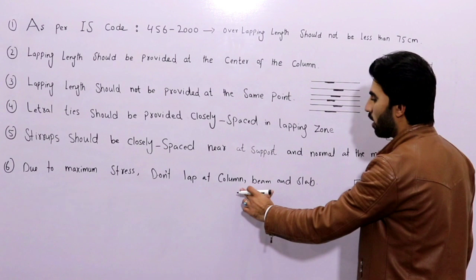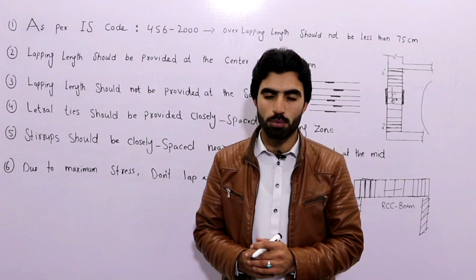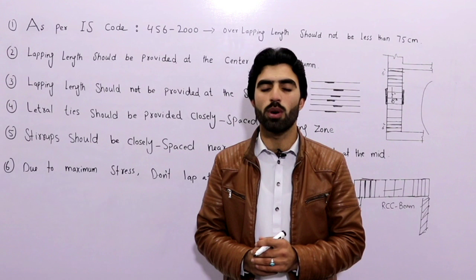The last point: do not provide lapping at the column-beam joint. Also remember that if the diameter of the steel bar is more than 36 mm, we should not provide lapping length. Due to maximum stresses, providing lapping length there is dangerous for your structure. These are some useful points. If you have any questions, comment below and I will try to reply. Thanks for watching, see you in the next video. Goodbye.